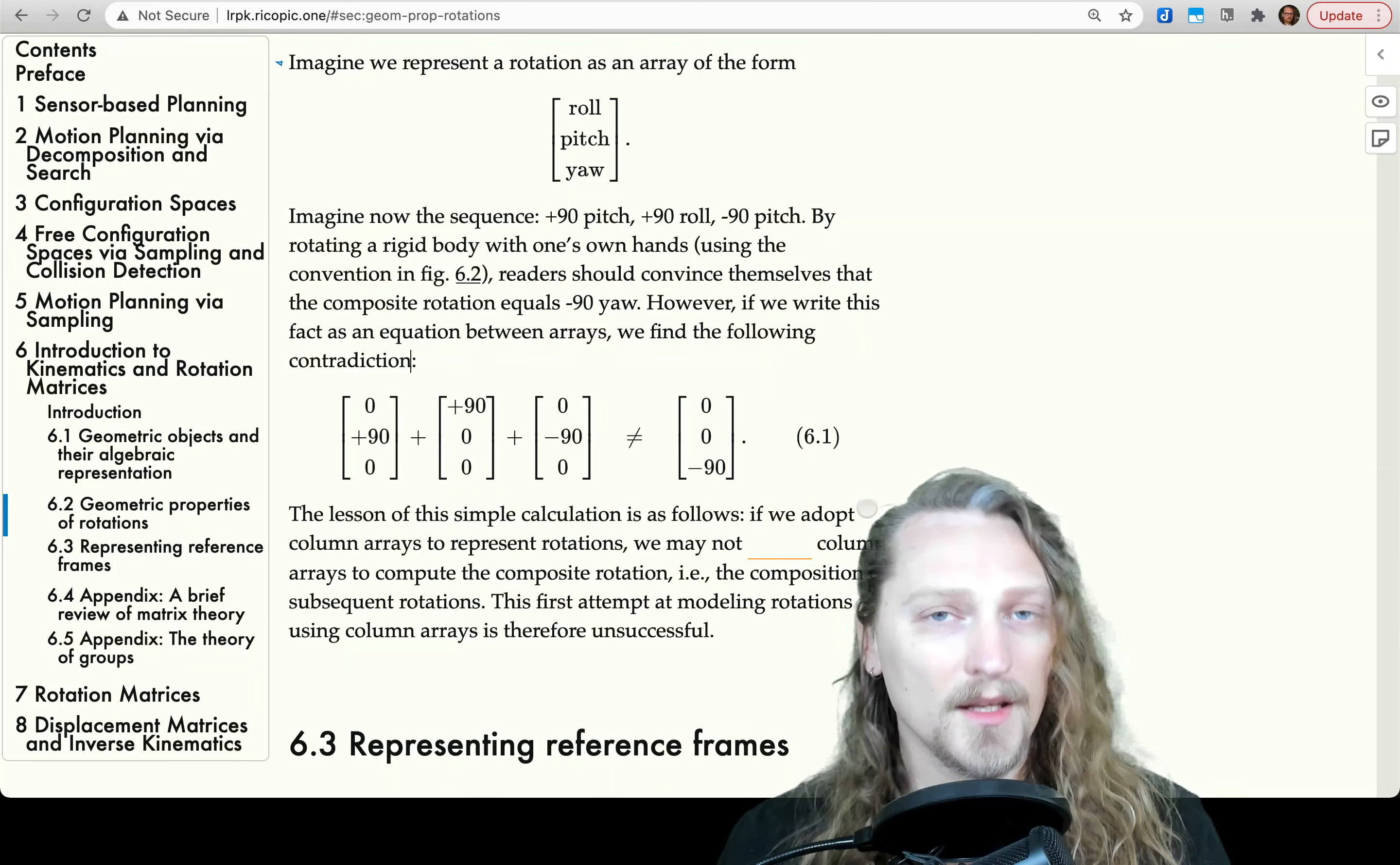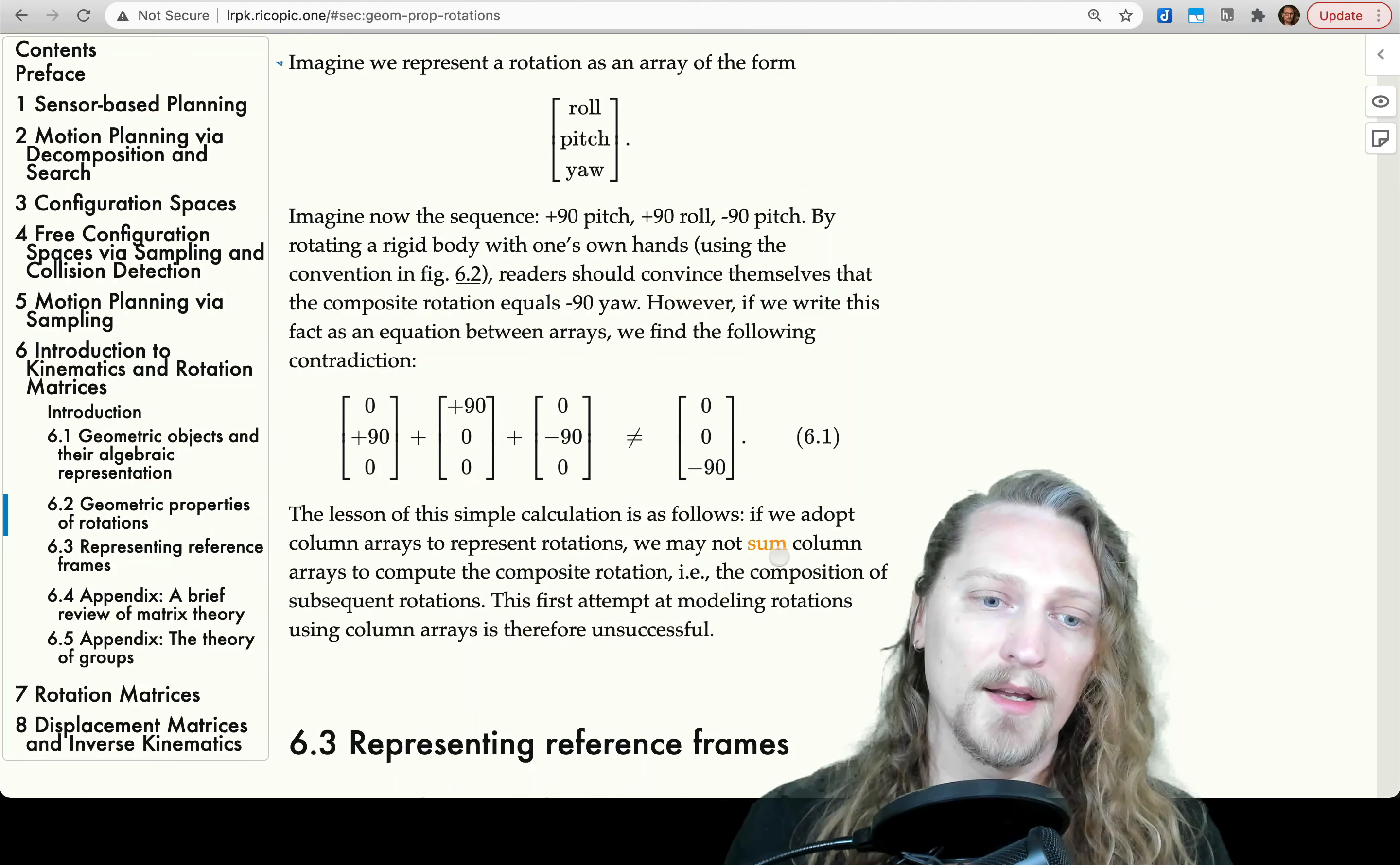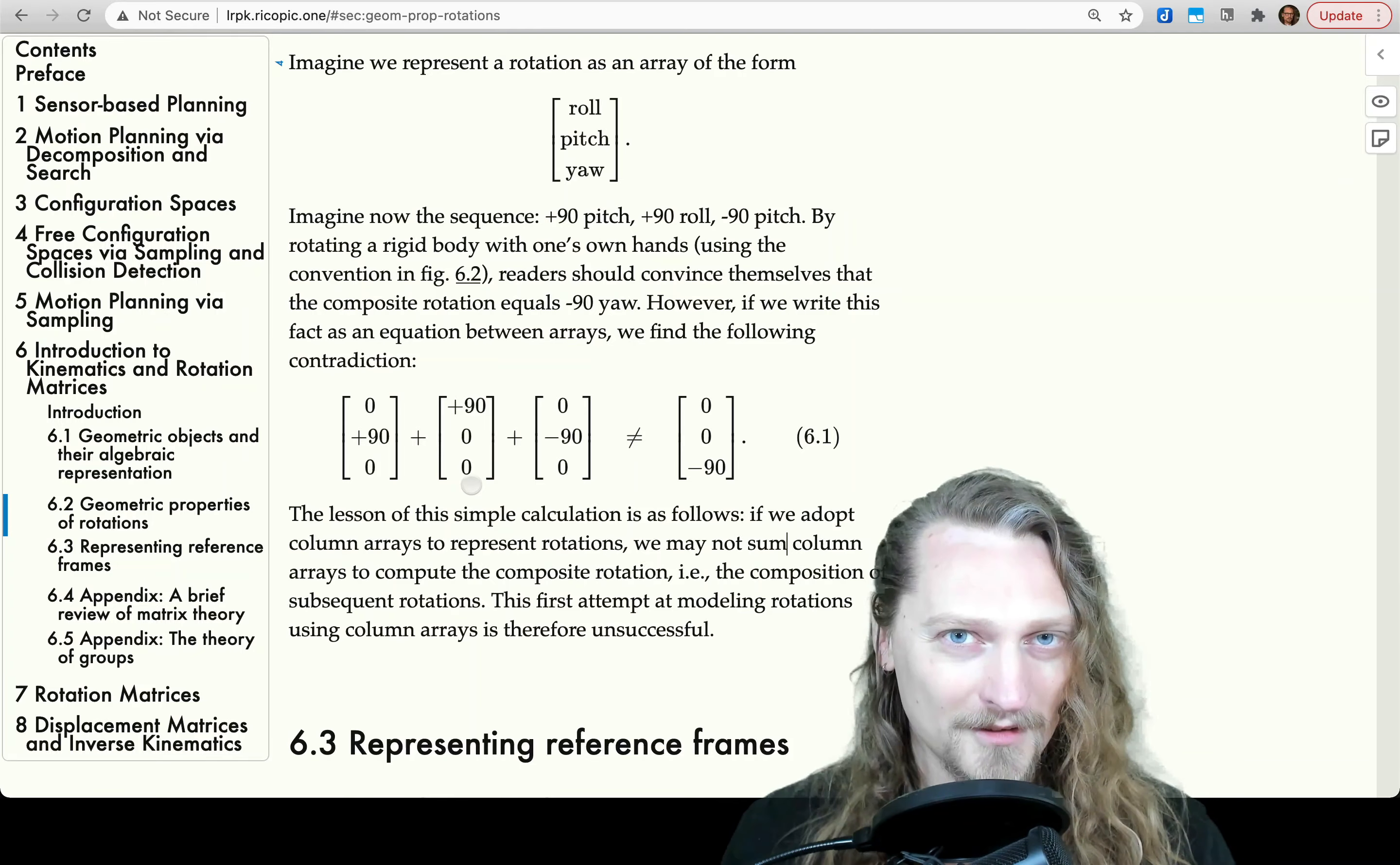Okay, the lesson of this simple calculation is as follows. If we adopt column arrays to represent rotations, we may not sum column arrays to compute the composite rotation, i.e., the composition of subsequent rotations. This first attempt at modeling rotations using column arrays is therefore unsuccessful, so please don't use the method of 6.1. This not equal sign should be a sign not to use it, but just an extra warning not to use this equation when composing rotations. Alright, we'll look a little bit further into this in the next lecture. I'll see you then.